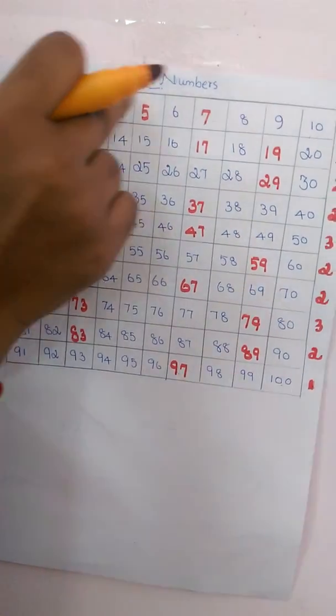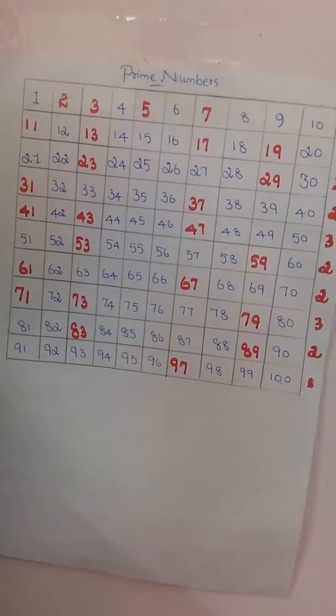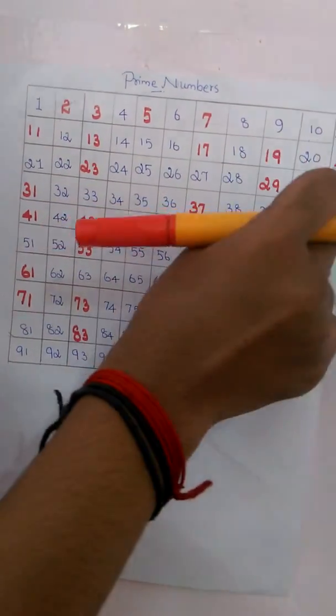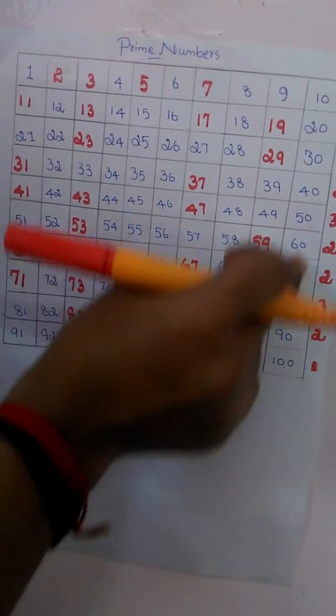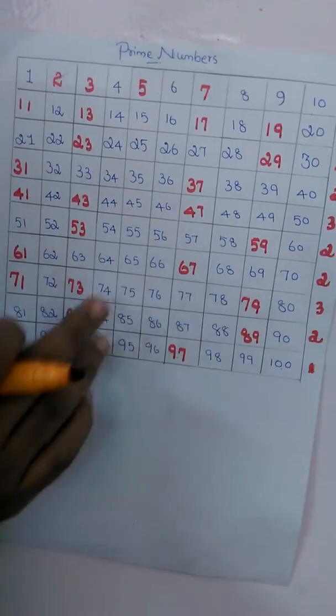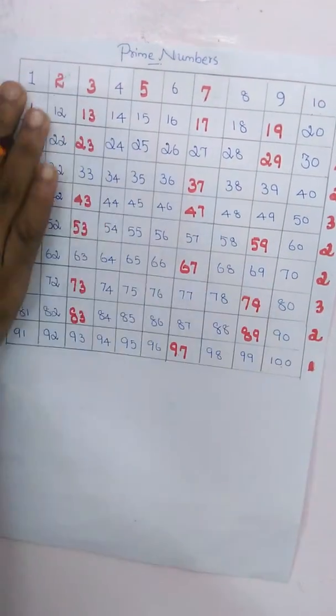That is 2, 3, 5, 7. And 21 to 30, 2. 23, 29. Use, memorize this number only. Then you can memorize the 25 prime numbers from 1 to 100.